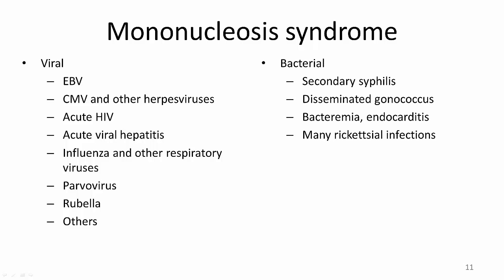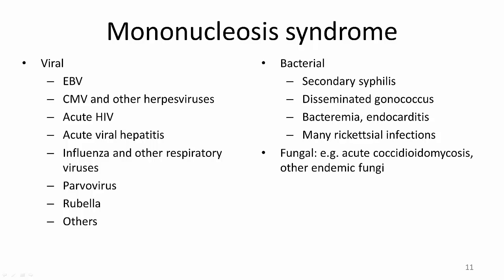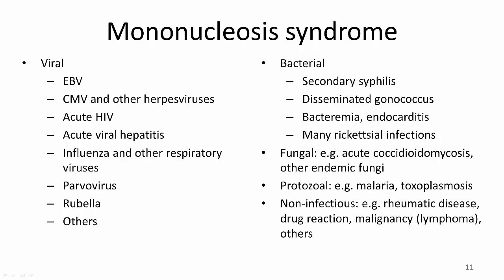In addition to viruses, a number of bacterial pathogens can produce a similar syndrome, including syphilis in the secondary or spirochetemic stage, disseminated gonococcal infection, many rickettsial infections, and bacteremia and endocarditis due to many possible organisms. Other infections include acute coccidioidomycosis, or in some instances other endemic fungi, and some protozoal infections, particularly malaria or toxoplasmosis. It's also important to keep in mind that several non-infectious etiologies can lead to similar symptoms as well, such as some rheumatic diseases, malignancies, and drug reactions.